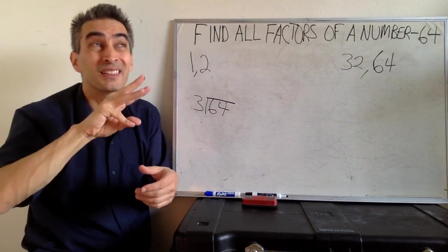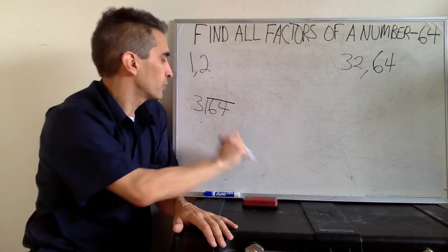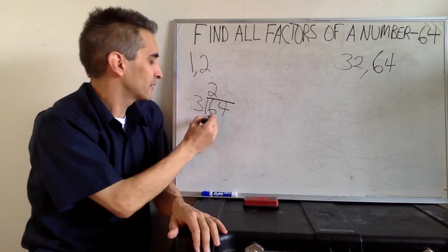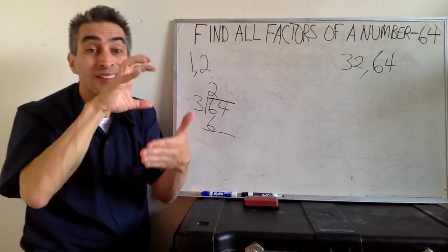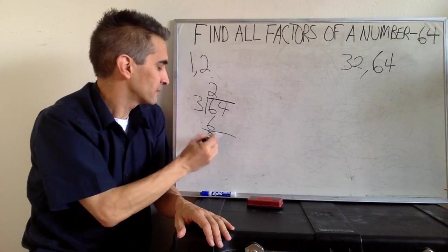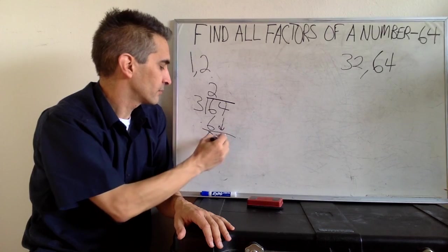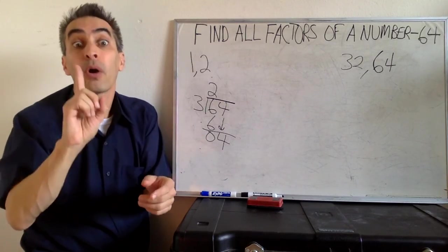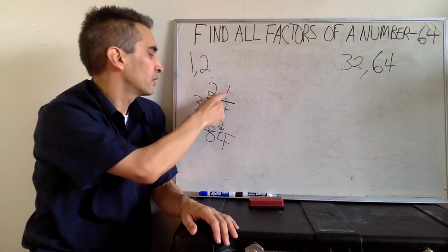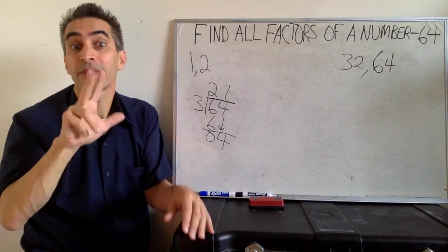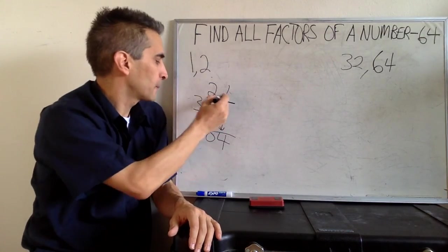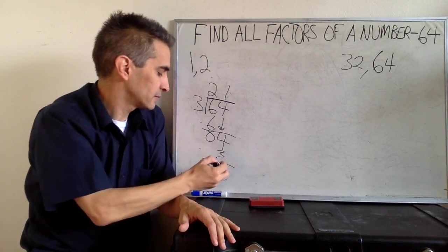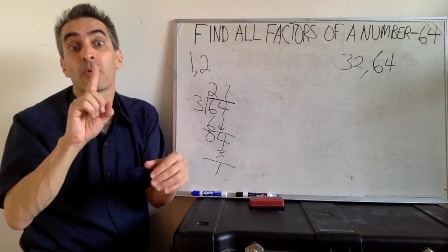3 goes into 6. How many times? 2 times. 2 times 3 equals 6. We can subtract. And then 3 goes into 4. How many times is that? Oh, 1 time. 3 times 1 equals 3. Now we subtract. 4 minus 3 is 1.